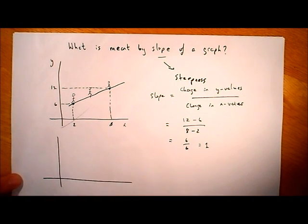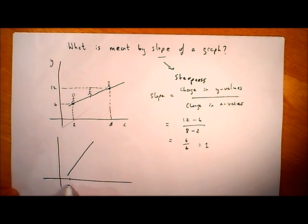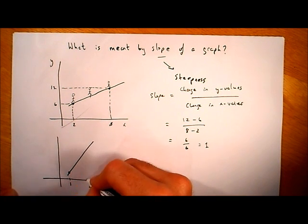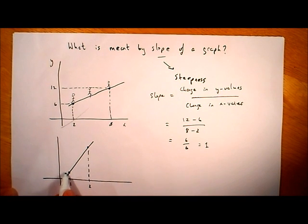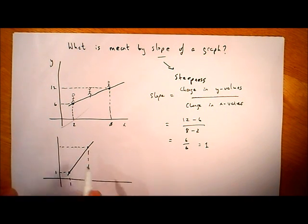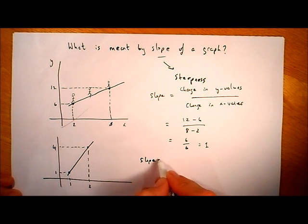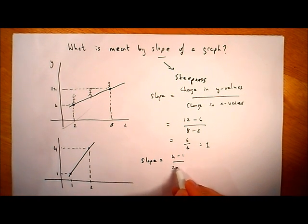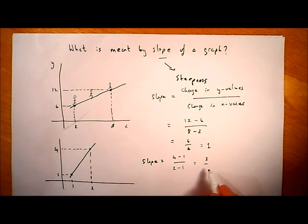Let's have a look at another graph. This line is a little bit steeper. Say we have this point here with x value 1, and this point here with x value 2. The corresponding y value for the first point is 1, and the corresponding y value for the second point is 4. So the slope is the change in y divided by the change in x: 4 minus 1 divided by 2 minus 1, which gives us 3 divided by 1. So the slope or the steepness is 3.